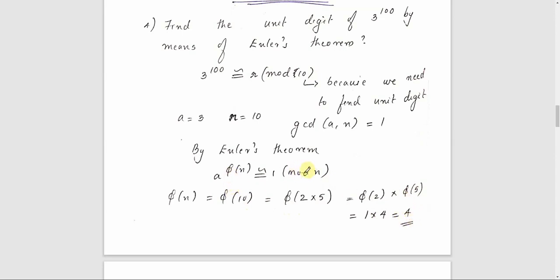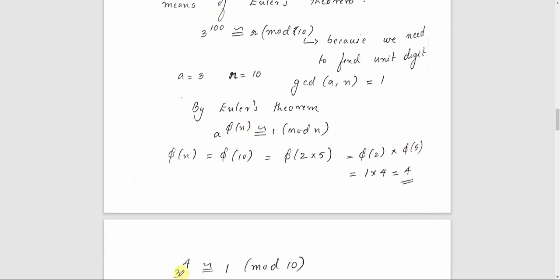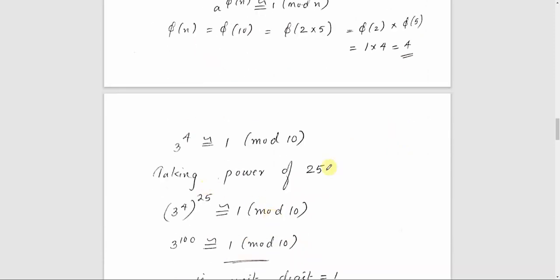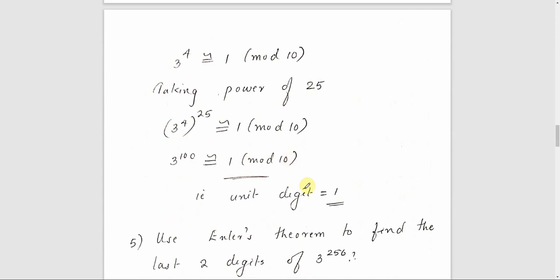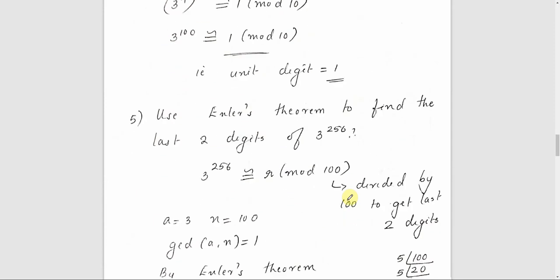Applying Euler's theorem with φ(N) equal to 4: 3 raised to 4 is congruent to 1 mod 10. So the unit digit of 3 raised to 100 is 1.